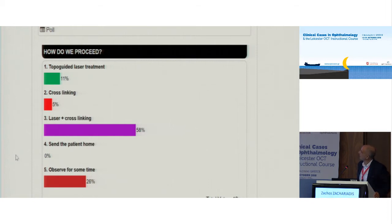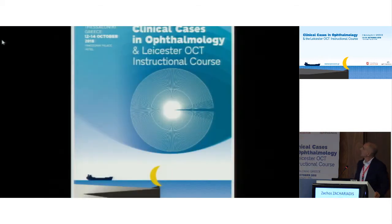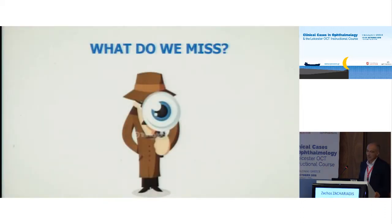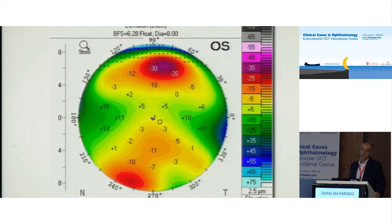Never make a decision before having information about the back surface of the cornea. This is his posterior corneal surface and there is no elevation at all. We sent the patient home and he came back three weeks later — the steepness dropped from 51 to 48.